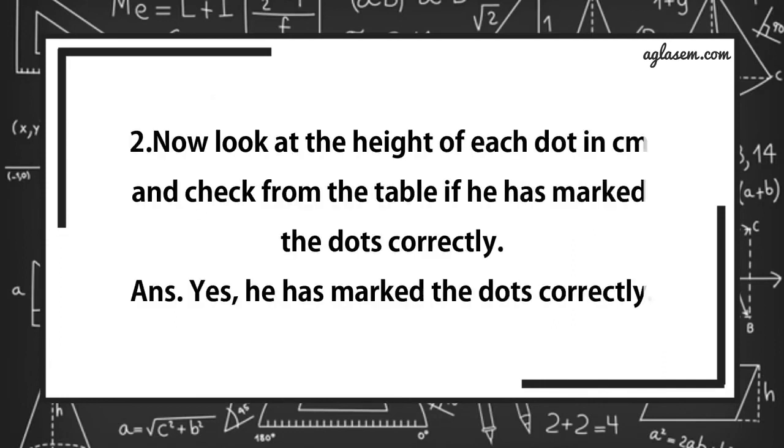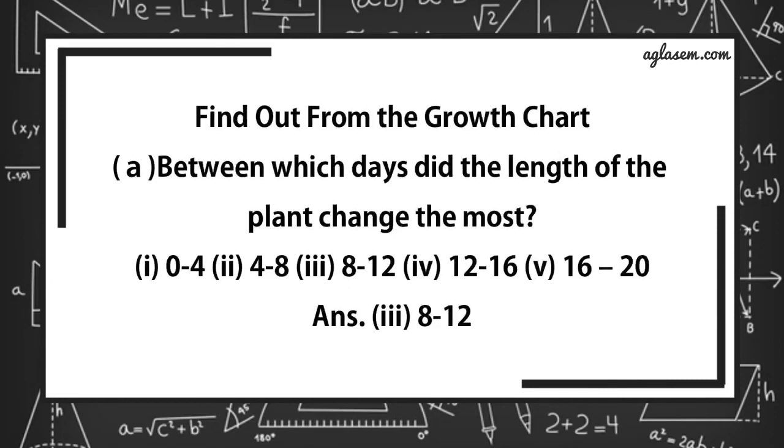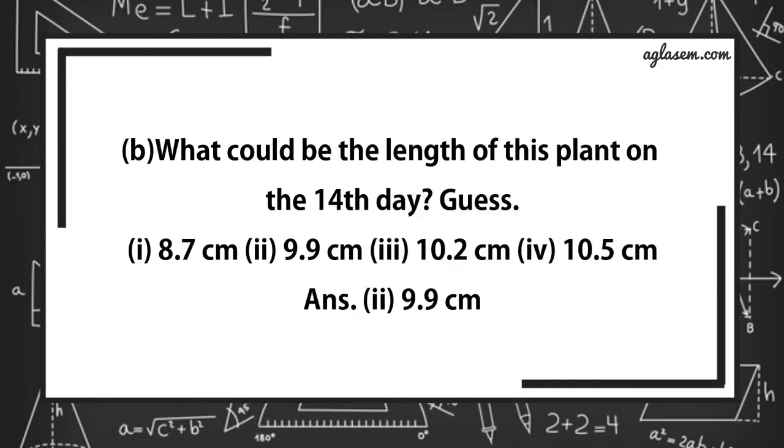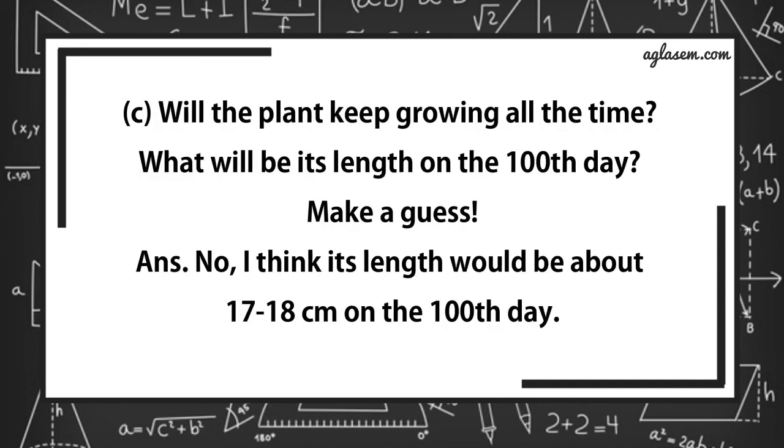Question number 2. Now, look at the height of each dot in cm and check from the table if he had marked the dots correctly. Answer is, yes, he has marked dot correctly. Find out from the growth chart. Between which days did the length of the plant change the most? From 0 to 4, 4 to 8, 8 to 12, 12 to 16, 16 to 20? Answer is third, that is, 8 to 12. B part, what could be the length of this plant on the 14th day? 8.7 cm, 9.9 cm, 10.2 cm, 10.5 cm? The answer is second, that is, 9.9 cm. C part, will the plant keep growing all the time? What will be its length on the 100th day? Make a guess. Answer is, no, I think its length would be about 17 to 18 cm on the 8th day.